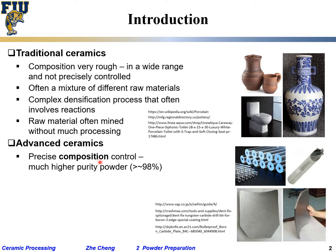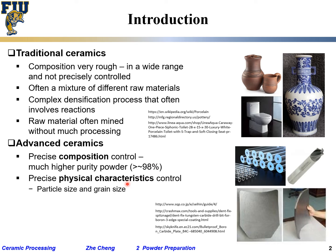Advanced ceramics require very precise composition control — no longer just mining from the field. The purity of the powder must be greater than 98 percent. We also need precise physical characteristics for the raw material powder, including specific particle size range and grain size.